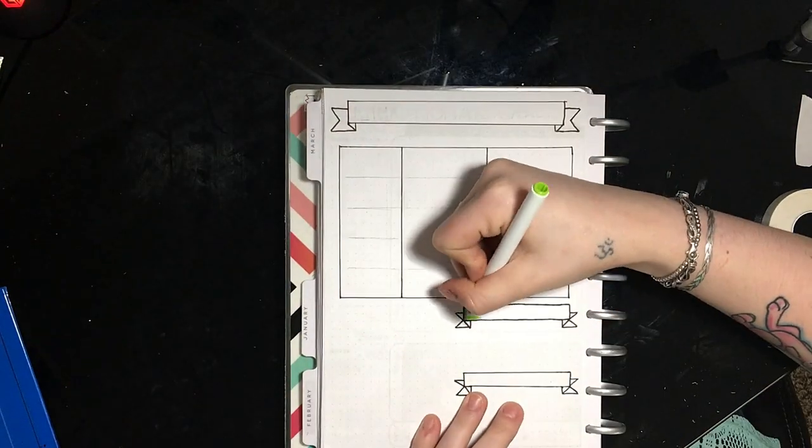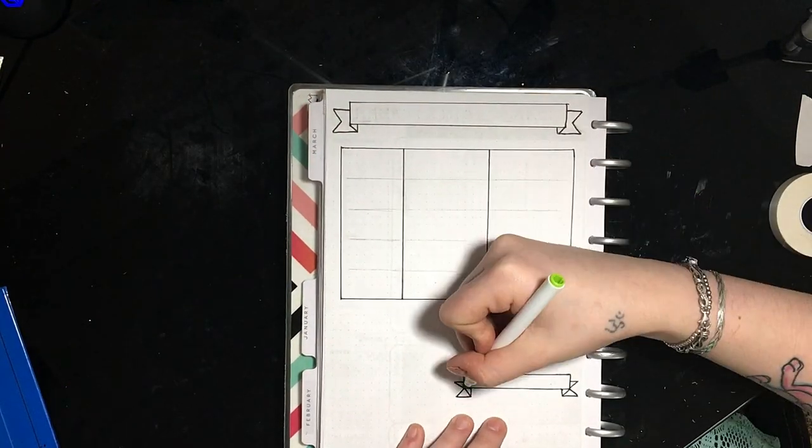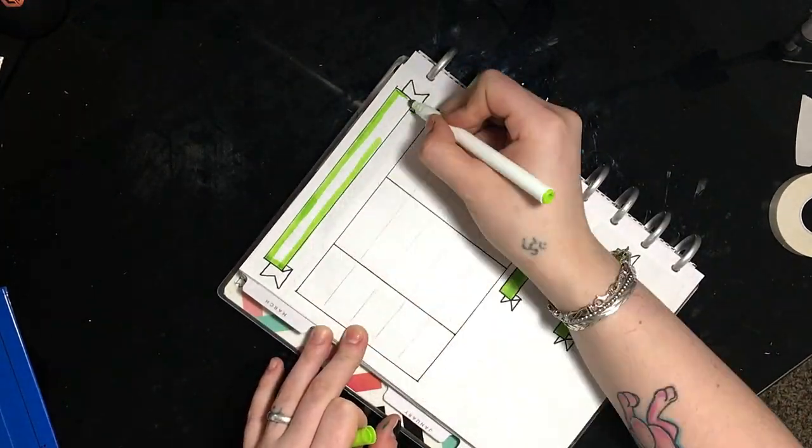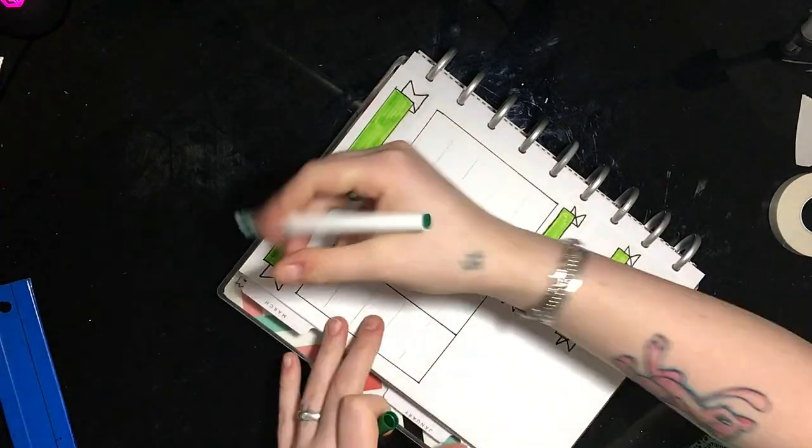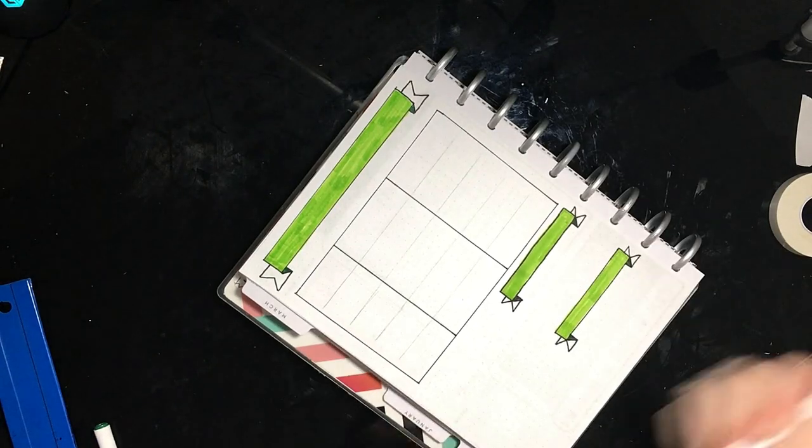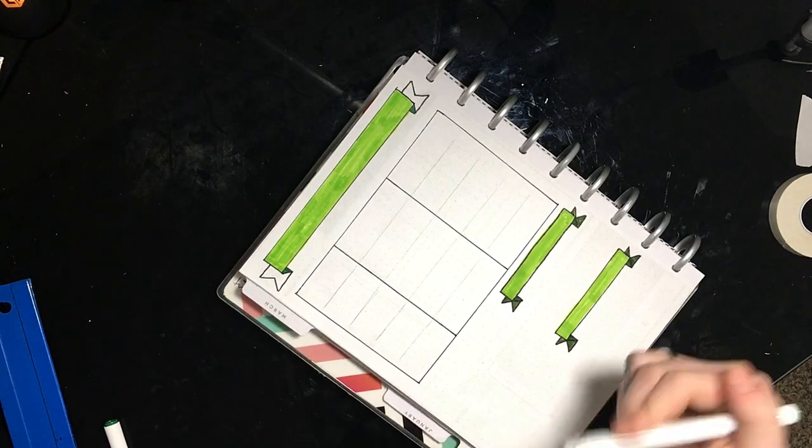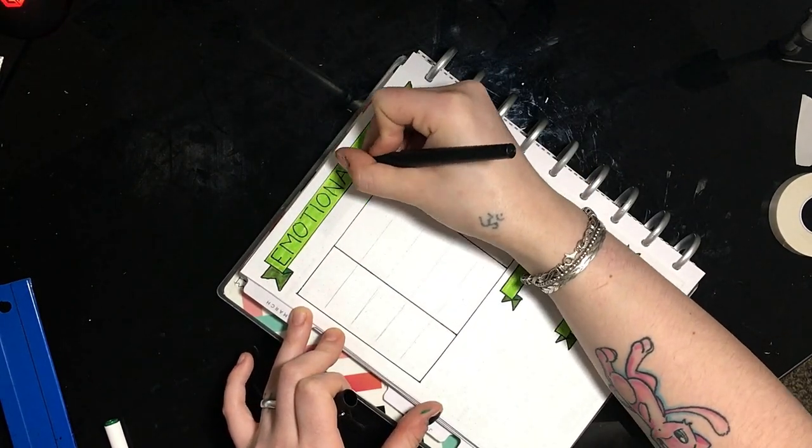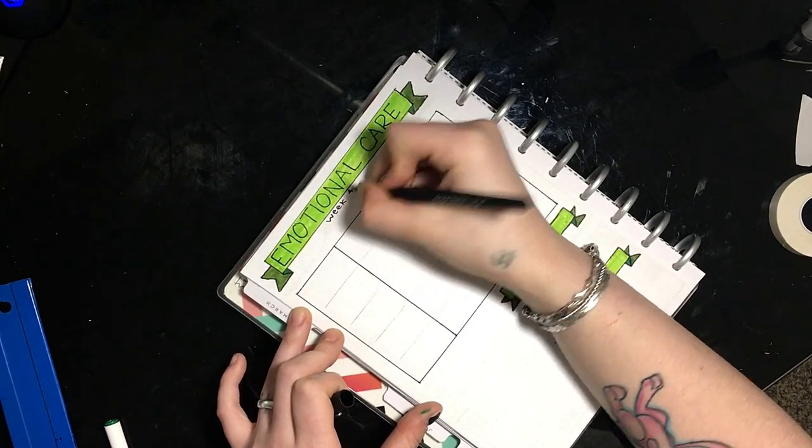And now for the part you've all been waiting for this whole time, the emotional care portion. Finally, gosh. Okay, so I'm coloring in the banners and then I'm gonna write emotional care across the top of the page. And then the little box in the center, well I guess it's a big box, the big box in the center of the page is an emotional tracker.